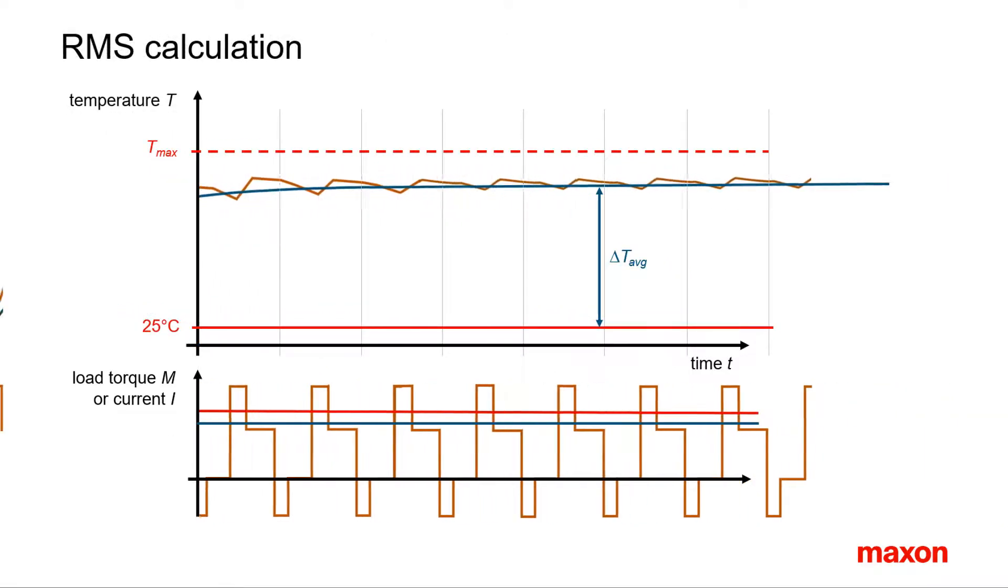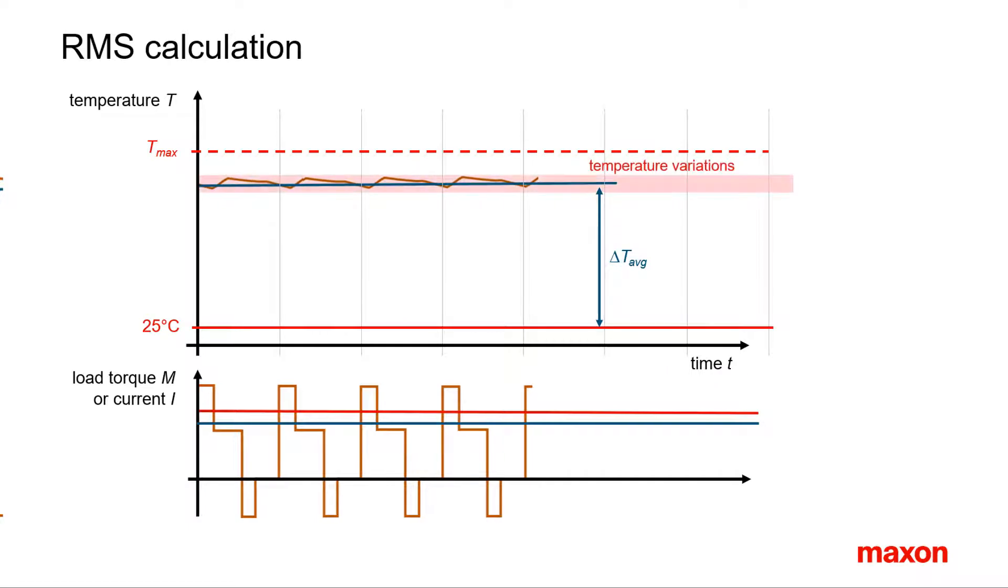Observe. The RMS value describes the steady state behavior. It gives no information how the heating process takes place or how large the temperature variations are within the operation cycle.